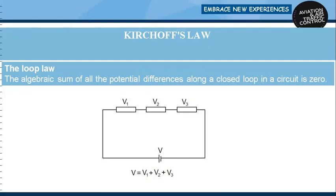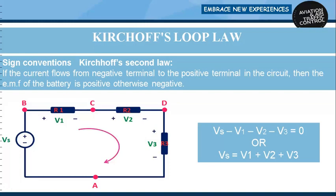Sign conventions for Kirchhoff's Second Law: if the current flows from the negative terminal to the positive terminal in the circuit, the EMF of the battery is positive, otherwise negative. If we are moving in the direction of current, the potential drop across the elements is treated as negative. In the example, moving in a loop from B to C, C to D, D to A, and back to B — the source voltage has current moving from negative to positive, so it is positive. Across resistances R1, R2, and R3, we move in the direction of current, so those drops are negative: VS − V1 − V2 − V3 = 0, giving VS = V1 + V2 + V3.